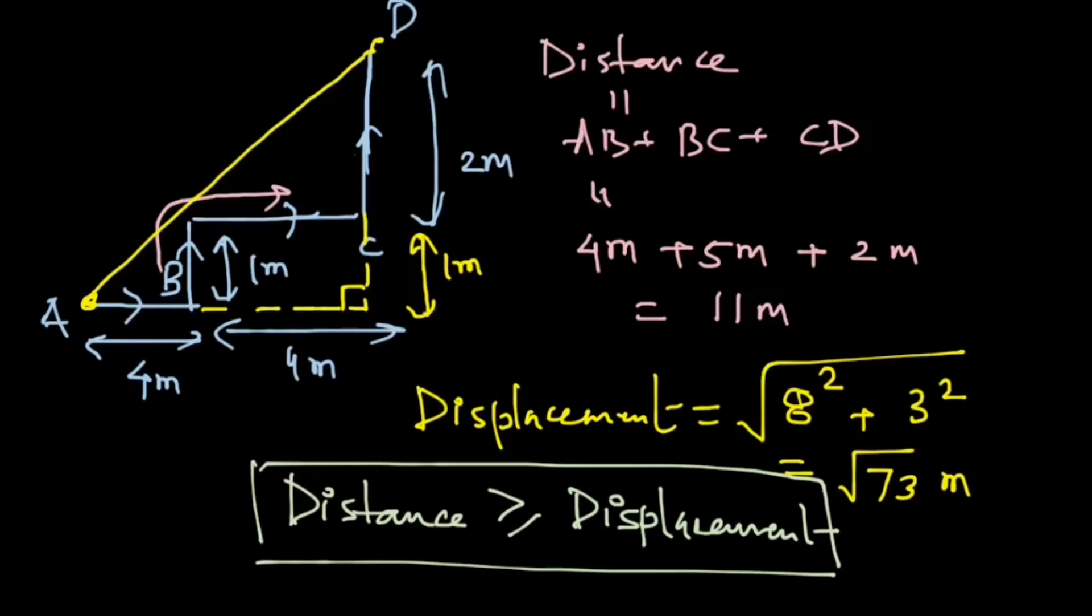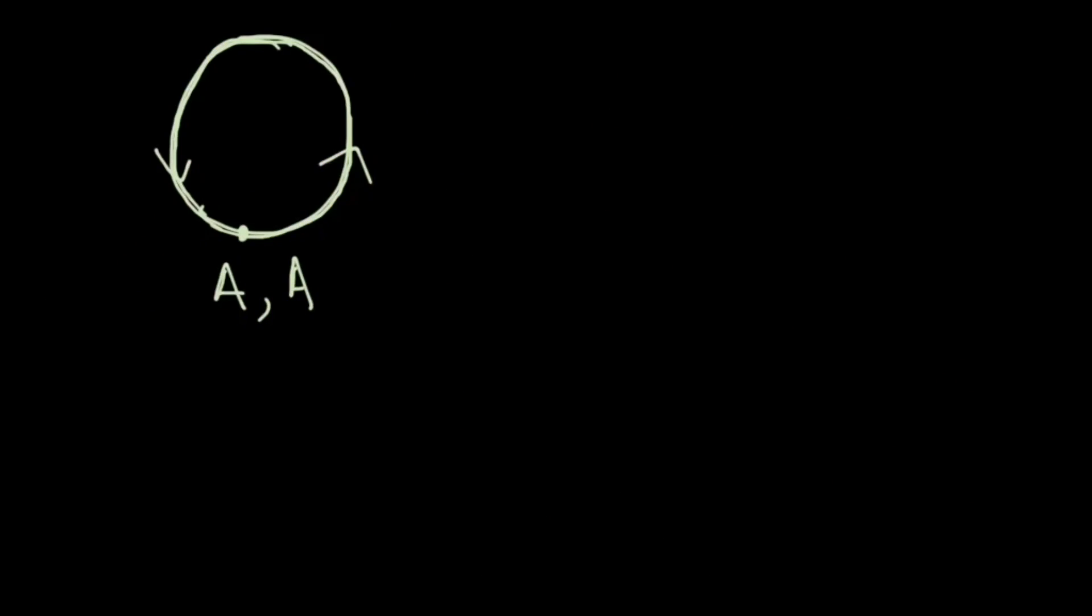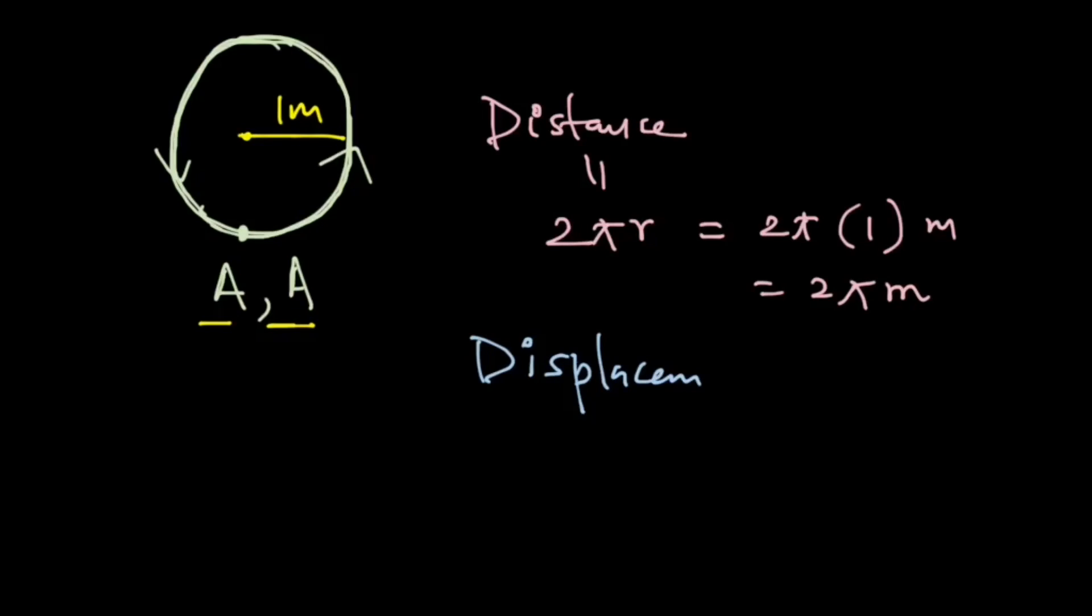All right, so we have a circular path of radius, let's say 1 meter, and an object is moving on this circular path from A back to A. So we need to find the distance and displacement. Once again we start with the distance. So for a complete circle, the total path length is the circumference, and that is 2πr, and so it gives us 2π into 1 meter, that is 2π meters. And for displacement, the initial and final points are the same.